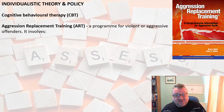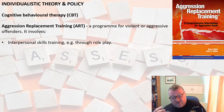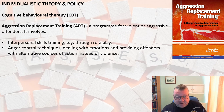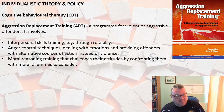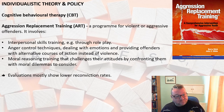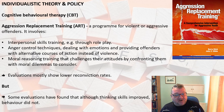Another example of a CBT programme is Aggression Replacement Training, ART, used for violent or aggressive offenders in this country. It involves training in interpersonal skills through role play, anger control techniques, teaching people how to deal with their emotions, providing offenders with alternative courses of action as opposed to violence, and moral reasoning training — challenging the offender's attitudes by confronting them with moral dilemmas. Evaluations mostly show lower reconviction rates for those who've attended ART, though some evaluations have found that although thinking skills improved, behaviour didn't and aggression was still present.